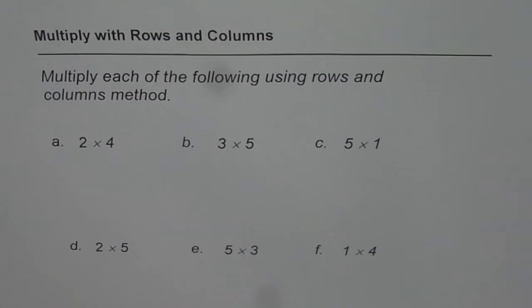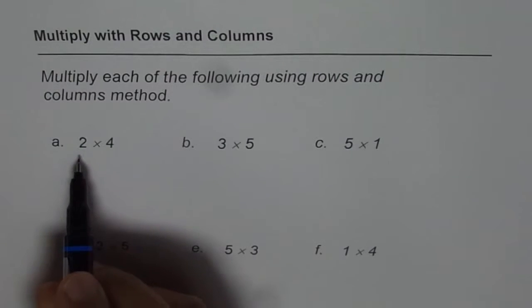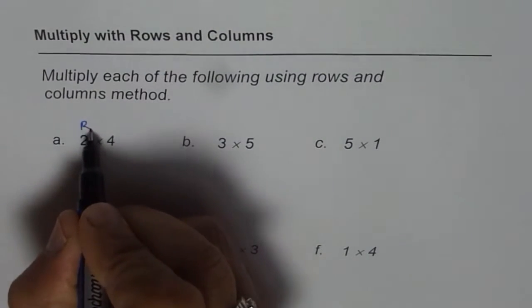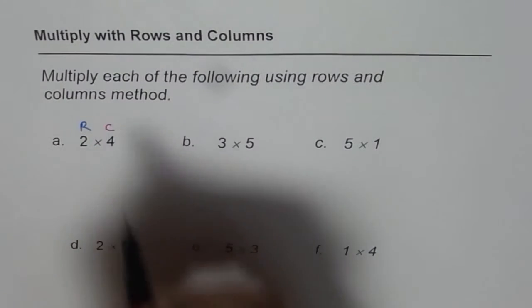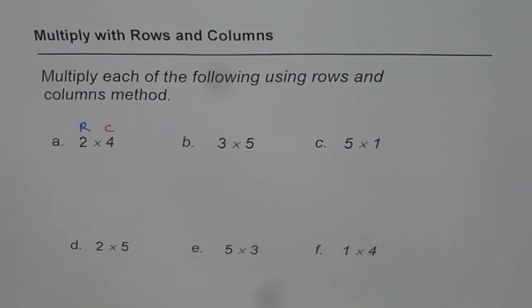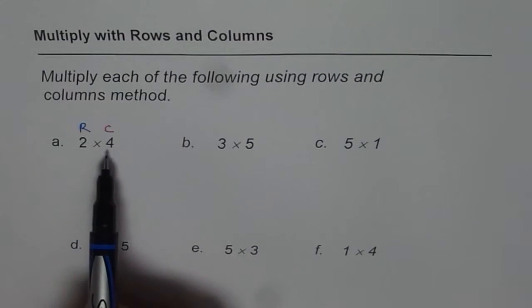I hope you remember. So when we say 2 times 4, we will treat 2 as number of rows and 4 as number of columns. You know you can interchange also, right? But in any case, we will treat the first number as rows and the second as columns.